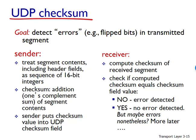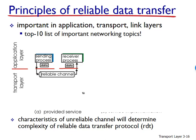Although UDP provides error checking, it does not do anything to recover from an error. Some implementations of UDP simply discard the damaged segment; others pass the damaged segment to the application with a warning. The problem of implementing reliable data transfer occurs not only at the transport layer, but also at the link layer and the application layers as well. Reliable data transfer is one of the most important problems in all of networking.